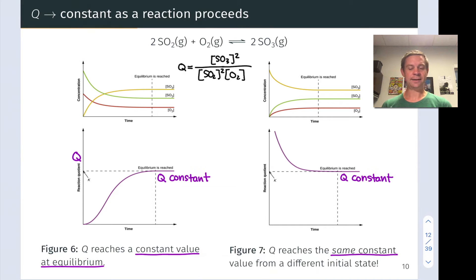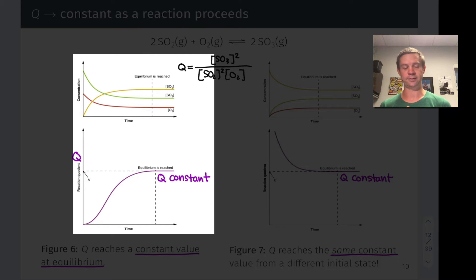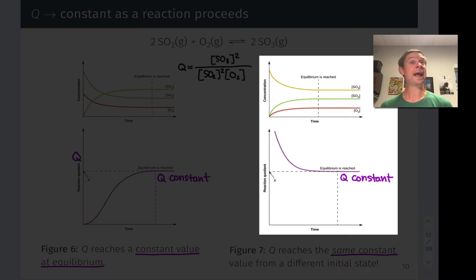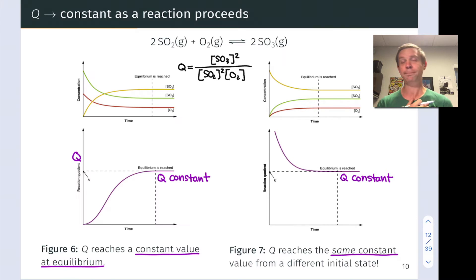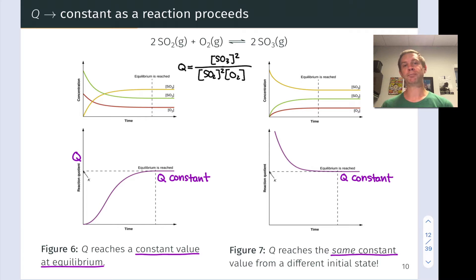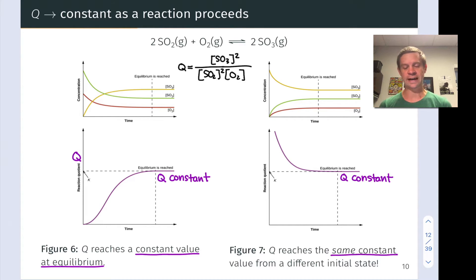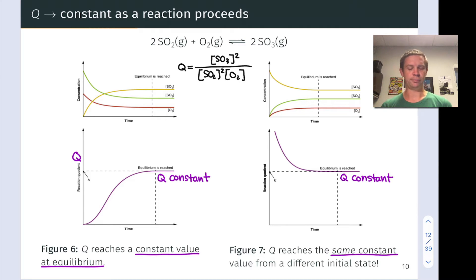To get a sense of that, let's look at this slide, where we examined two different sets of initial conditions for this reaction — one in which there were no products (the left-hand case) and one in which there were no reactants (the right-hand case). The reaction goes forward in the left-hand case as reactants disappear and product forms, and backward in the right-hand case as product disappears and reactants form. The values of Q are initially very different, but both arrive at Q equal to the equilibrium constant after some time.